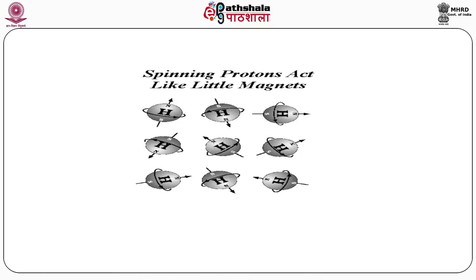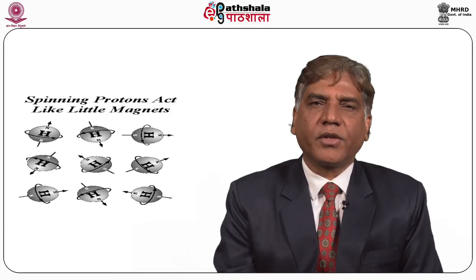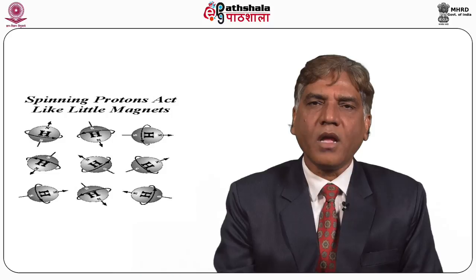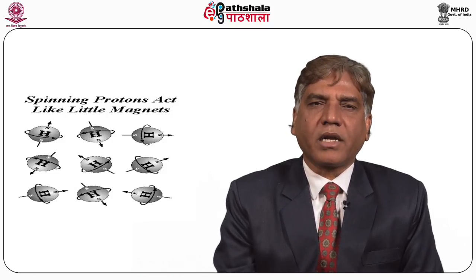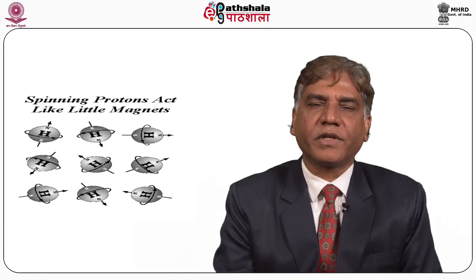Like the Earth has a spin angular momentum which causes it to spin about its axis — causing day and night rotation — and also has a magnetic dipole moment. In a simplified way, we may say that nuclei with an odd number of protons or neutrons behave like tiny magnets. However, in a sample, these nuclei are randomly oriented in the absence of a magnetic field, so there is no net magnetization present.